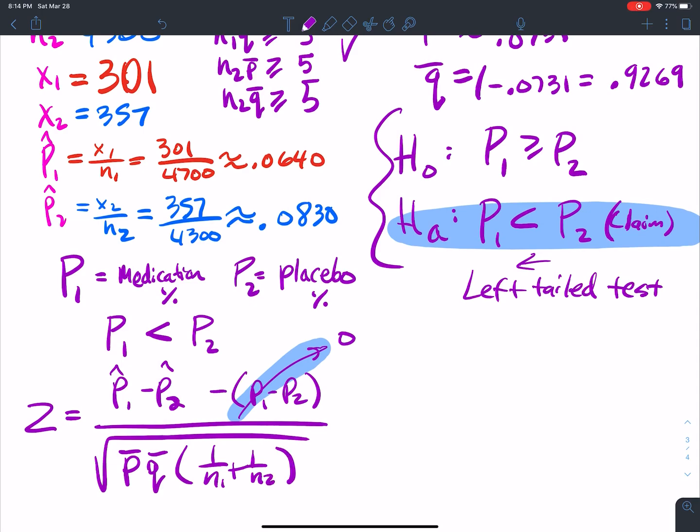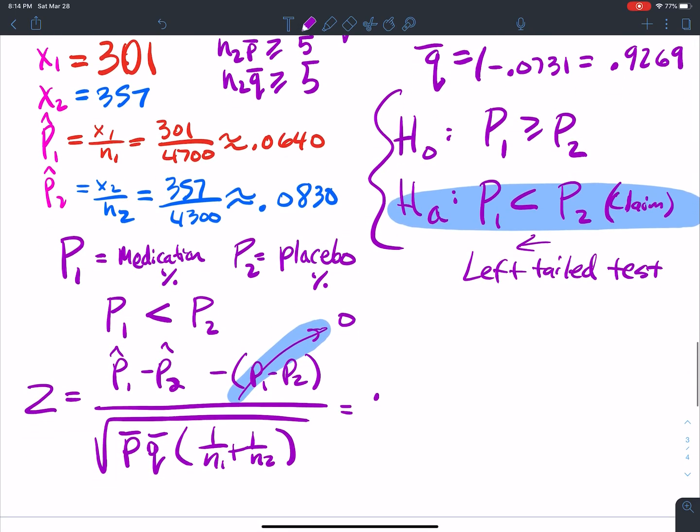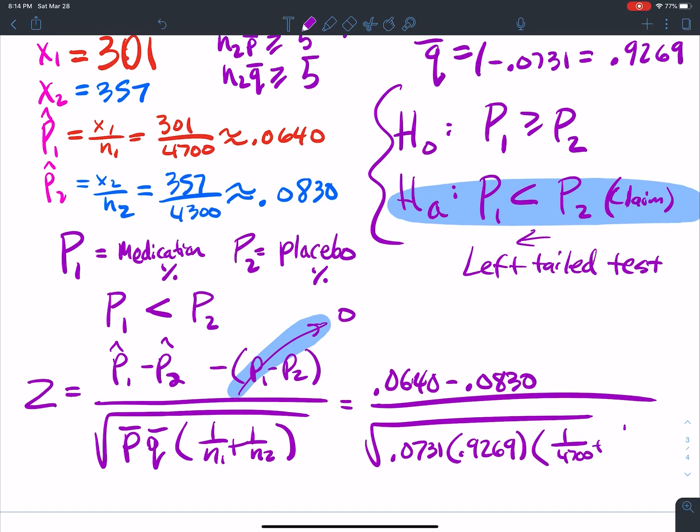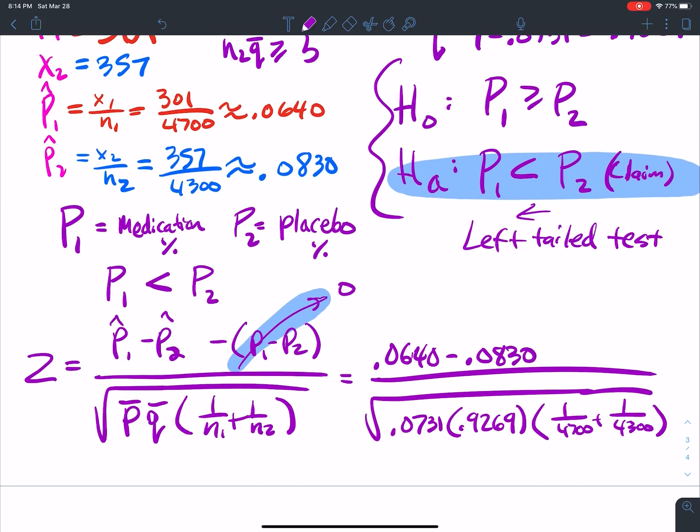And so this is going to be 0.0640 minus 0.0830 over square root 0.0731 times 0.9269 times 1 over 4,700 plus 1 over 4,300. And when I type this in my calculator, I'm going to get negative 3.46.